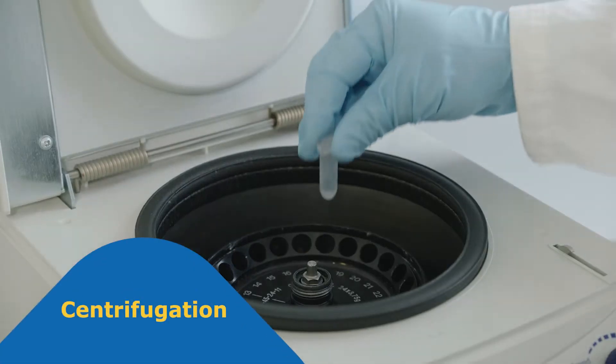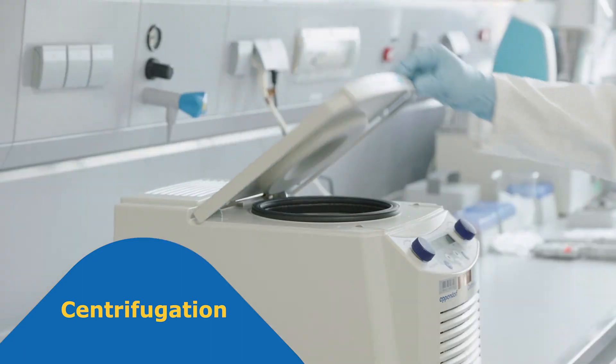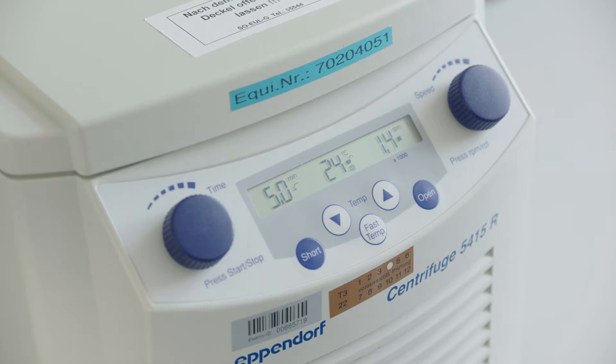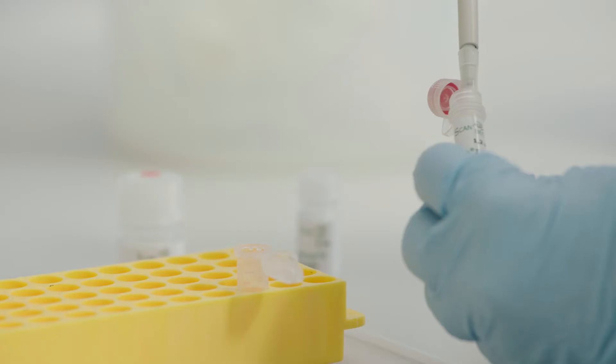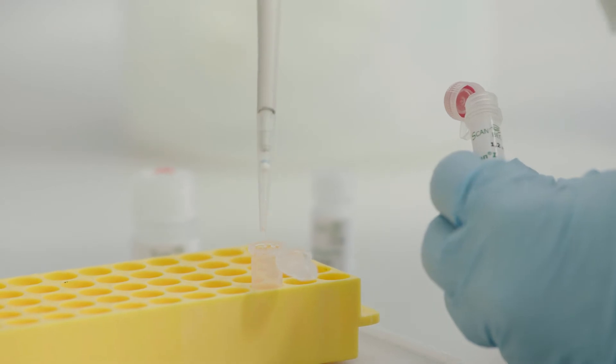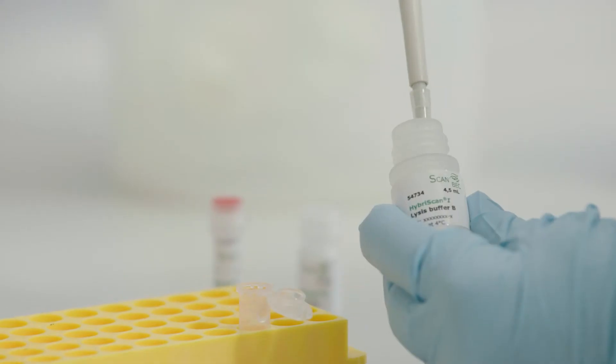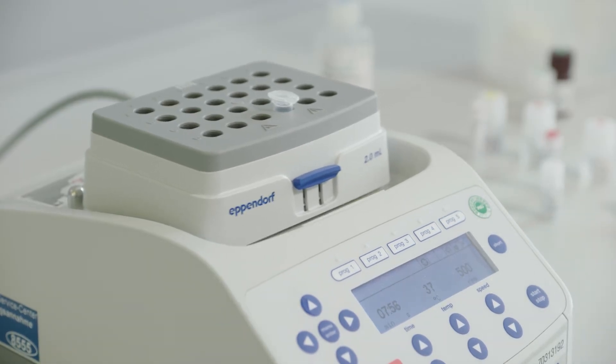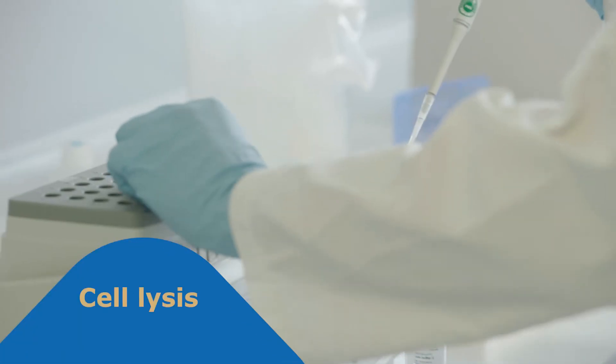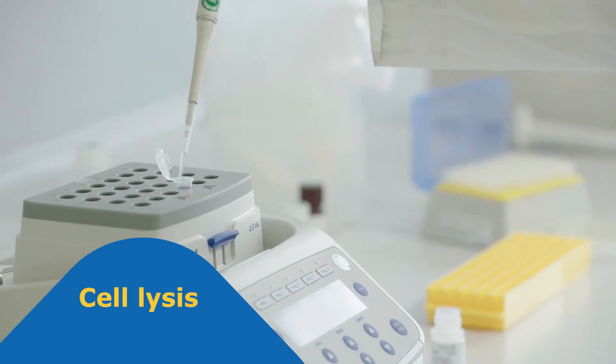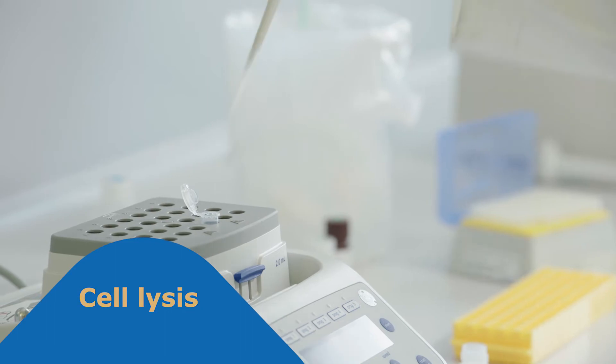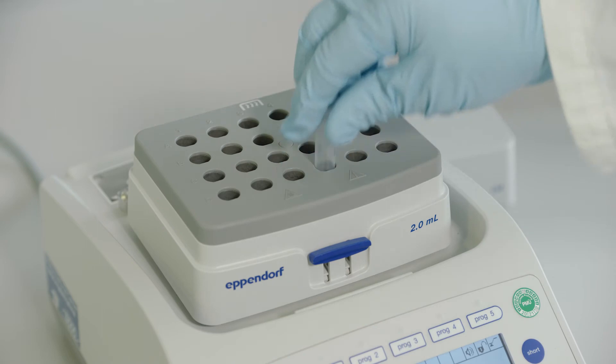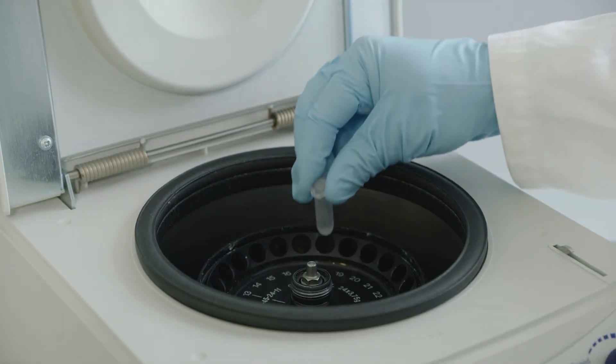The tube is centrifuged and the supernatant removed. Lysis buffer A and lysis reagent B are added to the pellet. The tubes are mixed and incubated for 15 minutes in a thermo shaker. Then a further lysis buffer is added, followed again by 15 minutes in the thermo shaker. The ribosomal RNA has now been released.